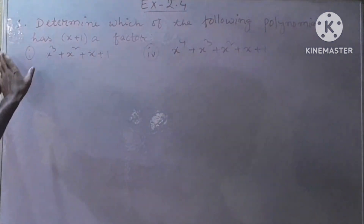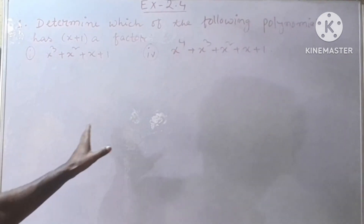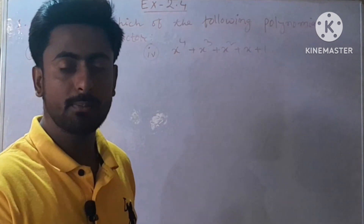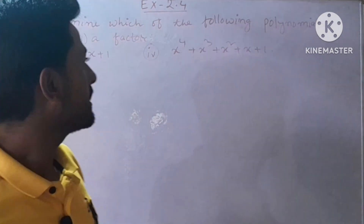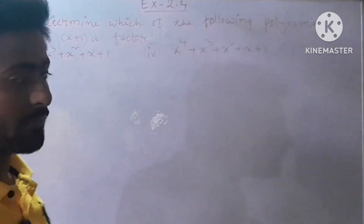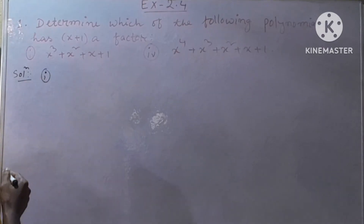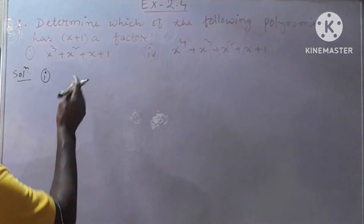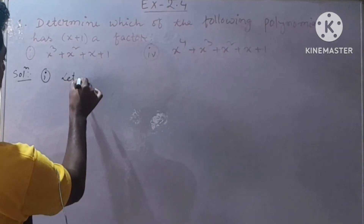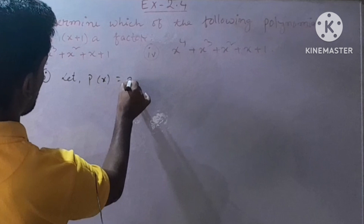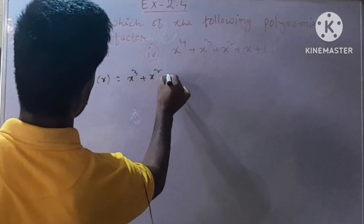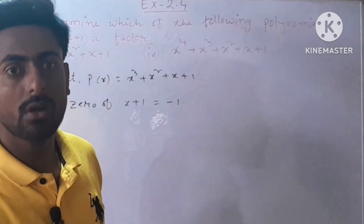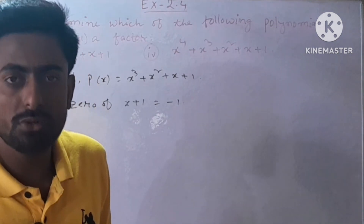Here, question number 1 says: determine which of the following polynomials has x plus 1 as a factor. That means some polynomials are given and we have to check which polynomial has x plus 1 as a factor. Roman number 1: the polynomial is given by x cube plus x square plus x plus 1. We give a name for this polynomial — let P of x equal to x cube plus x square plus x plus 1. Since we have to check whether x plus 1 is a factor or not, we use the Factor Theorem.